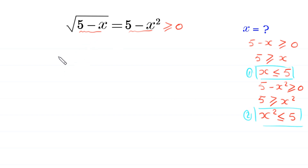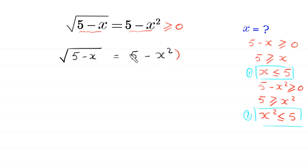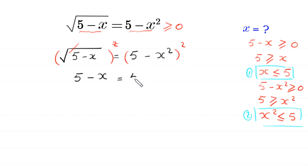Now let us square both sides of this equation. The square root of 5 minus x equals 5 minus x squared. Squaring both sides, the square cancels with the square root on the left, giving us 5 minus x equals (5 minus x²)² which expands to 5² minus 2 times x² times 5 plus x² whole squared.